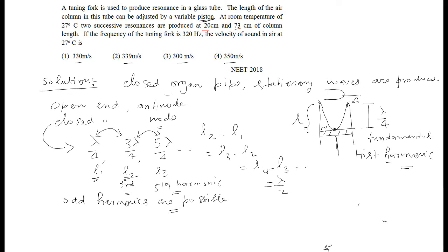So, what is given in the question, two successive resonances are produced at 20 cm and 73 cm. So, 73 and 20, successive resonating length, that is equal to lambda by 2. This gives you 53 is equal to lambda by 2. So, lambda is equal to 106. Of course, this goes in unit of centimeter.